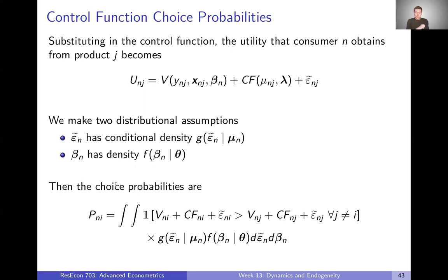So then we can write down choice probabilities. It's just that now we have to integrate over both a conditional density of epsilon tilde and a density of beta. So we've got this double integral instead of just one integral.